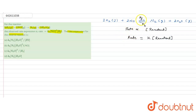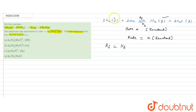For the forward reaction, the reactant side contains H2 and NO. Applying the rate law to the reactant side, the rate of forward reaction equals kf into concentration of H2 squared into concentration of NO squared, based on the stoichiometric coefficients.